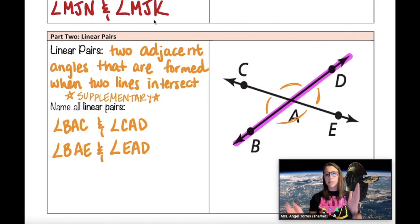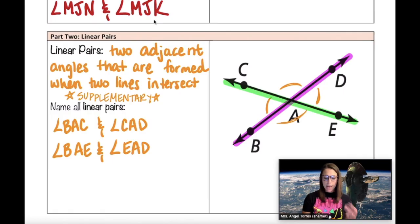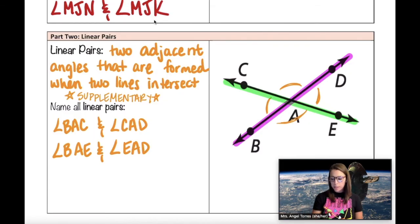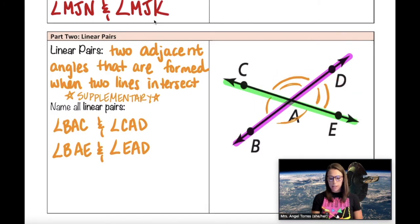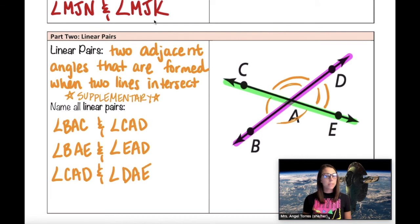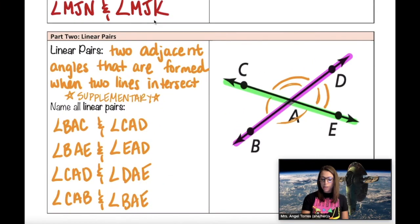Now let's look at the other line in this diagram, line CAE. It has its own set of linear pairs — one on the top right and one on the bottom left. On the top right, angle CAD and angle DAE are adjacent and supplementary, forming a linear pair. The last linear pair is angle CAB and angle BAE. One way to remember linear pairs: linear means to form a line, so think of a pair of angles that form a line with their non-adjacent side.